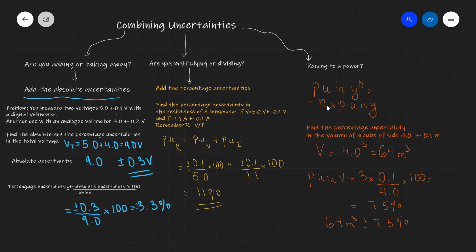Well, this was most of uncertainties. There's only one thing remaining for you to revise, and that is how to find the uncertainty from a graph. I'm including a link in the description of this video so that you guys could carry on with your revision. Thank you very much for watching. I hope this was useful, and if there are any questions, please feel free to drop a comment, and I'll see you in the next video.